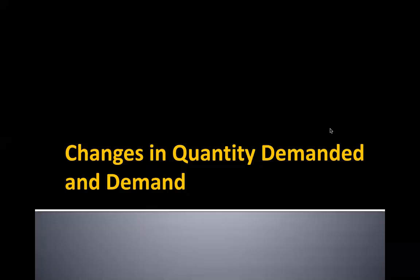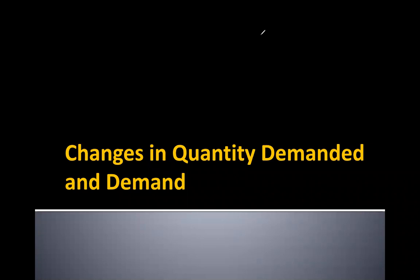Now let's get into the complicated stuff: changes in quantity demanded versus changes in demand. This is where having that base knowledge really comes into play, because there is a difference between the two. When there is a change in quantity demanded, the result on the graph is different from a change in demand as a whole. A change in demand looks different graphically than a change in quantity demanded.